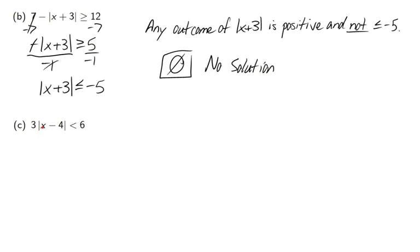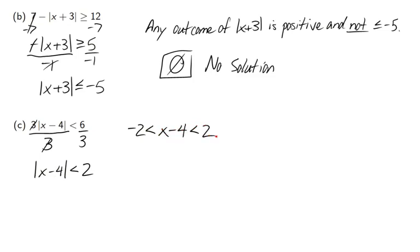Next example: the absolute value is not by itself, so divide by 3 first. Since 3 is positive, the sign doesn't change. We get the absolute value of (x minus 4) is less than 2. Applying the less than rule: negative 2 is less than x minus 4 is less than 2. Adding 4 to all sides gives 2 less than x less than 6. So the interval notation is (2, 6) with parentheses.